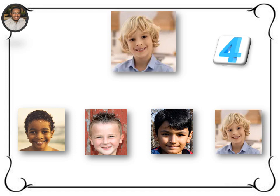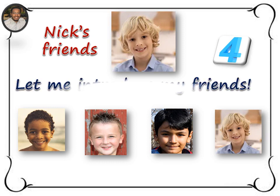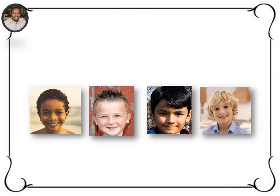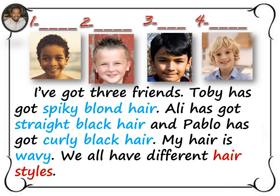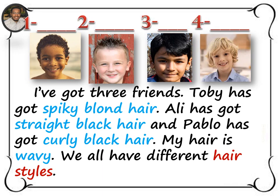And are these your friends? Let me introduce them to you. You can read the following text and get to know them. I've got three friends. Toby has got spiky blonde hair. Ali has got straight black hair. And Pablo has got curly black hair. My hair is wavy. We all have different hair styles. Take two minutes and then we'll correct.